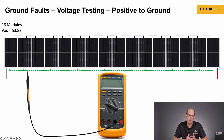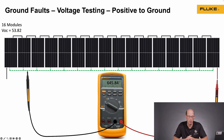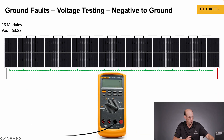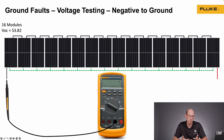Now if I measure from the positive to ground, in this case I'm getting 645 volts. I was expecting zero, so this is an unexpected measurement — I'm going to record this for later analysis. When measuring from negative to ground, I get approximately 215 volts, also an unexpected result. I should have zero, so I'll also write this down for analysis.